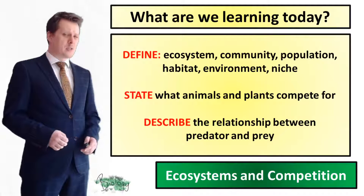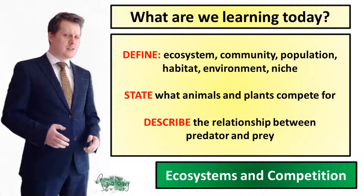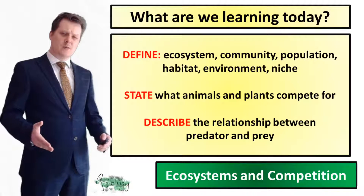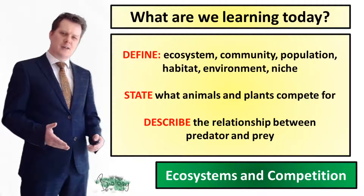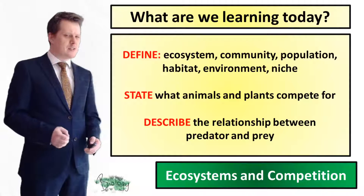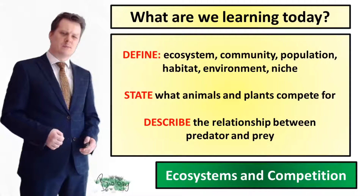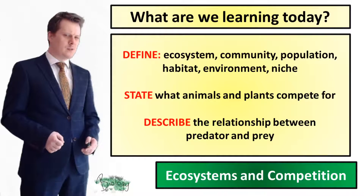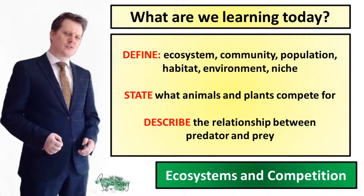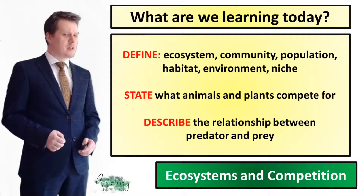Today we're going to define some of our keywords: ecosystem, community, population, habitat, environment and niche. We're going to state what animals and plants compete for, and we're going to describe the relationship between predator and prey.